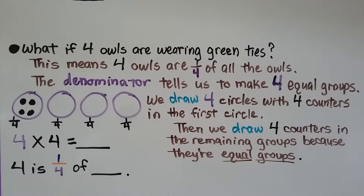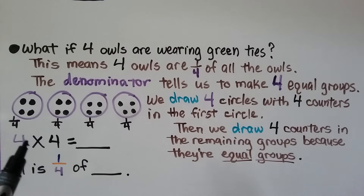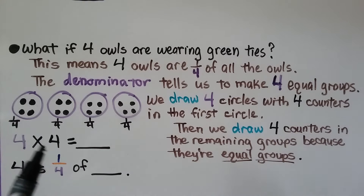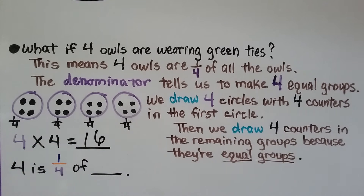What if 4 owls are wearing green ties, not 3? Well, this means 4 owls are one-fourth of all the owls. The denominator 4 tells us to make 4 equal groups. We draw 4 circles with 4 counters in the first one because that's one-fourth, then 4 counters in the remaining groups because they're equal groups. We have 4 groups with 4 counters in each group — 4 times 4 is equal to 16. That means 4 is one-fourth of 16.